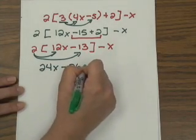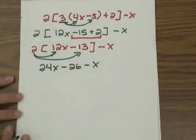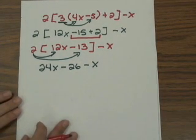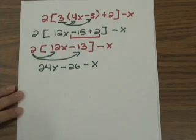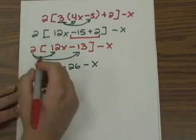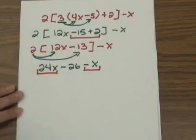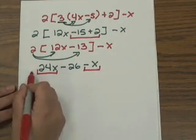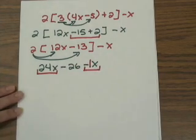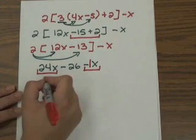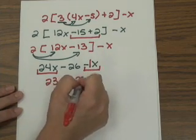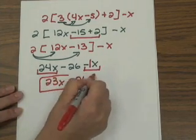This is an expression — there's no equal sign, so there's no need to try to solve. Your job is only to combine like terms. Here, 24x and negative x are like terms. A positive 24 and a negative 1 coefficient: since they're opposite signs, we subtract and get 23x, the sign of the higher number. Bringing down minus 26, this expression has been simplified completely.